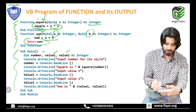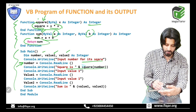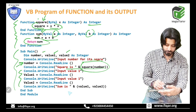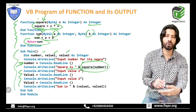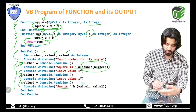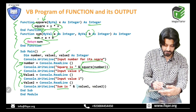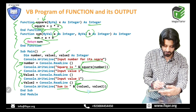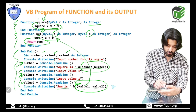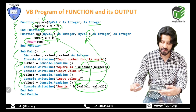In the main program, three variables are declared: number, value1, and value2. The user is prompted to input a number for its square, and the call to the 'square' function is made. Then the user is asked to input value1 and value2. The output line displays 'sum is' and the call to the 'sum' function is made — value1 is passed to a, value2 to b — and the output is displayed.